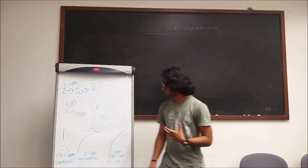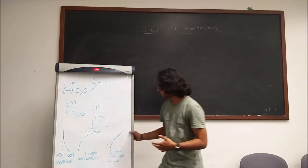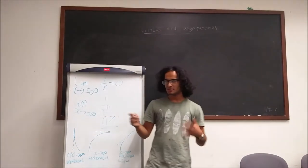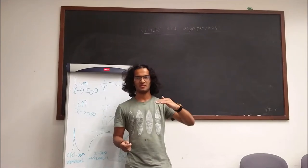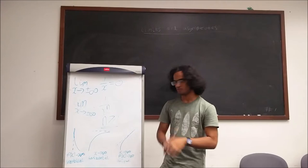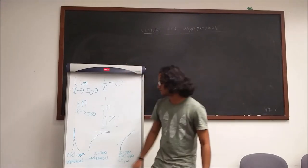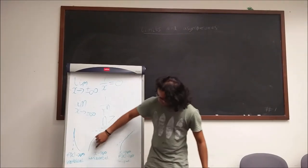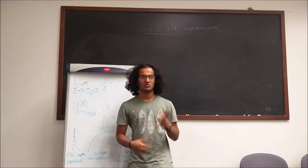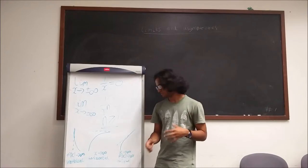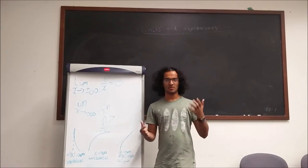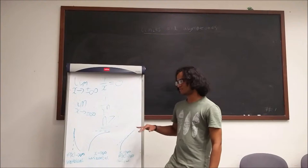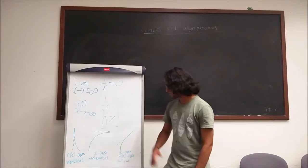The next topic is asymptotes. There are many different types: vertical, horizontal, and oblique. Vertical asymptotes typically happen when you have a fraction and the denominator becomes equal to 0 — f of x tends to infinity. Horizontal asymptotes happen when x tends to infinity, like something over x, some kind of 1 over a polynomial. Oblique asymptotes happen when your curve tends to a linear equation — both x and f of x tend to infinity.